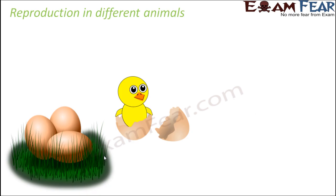Now reproduction is a process which is common to many animals. A lot of animals directly give birth to their young ones, like human beings — they directly give birth to a baby. But a lot of animals, especially birds, they do not directly give birth to a small bird. They lay eggs and then the eggs give out new organisms — like how you see here, the egg shell breaks and a new tiny bird comes out of it.